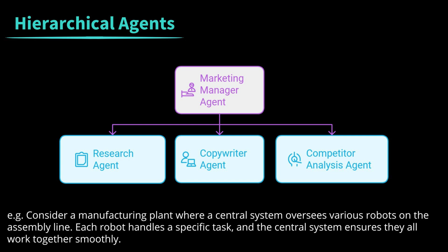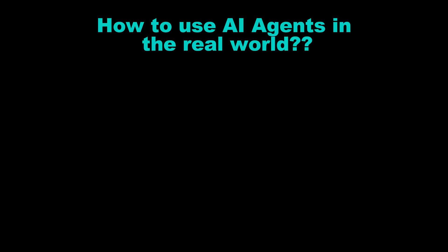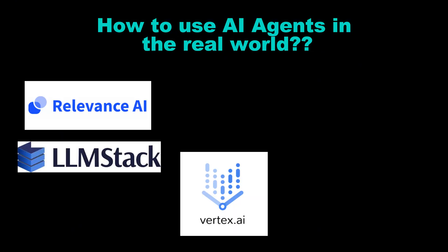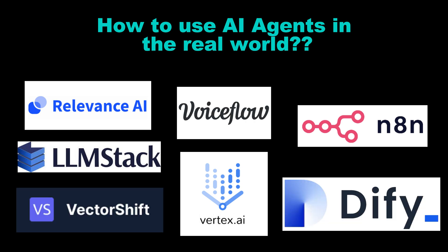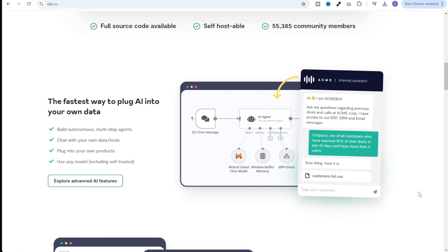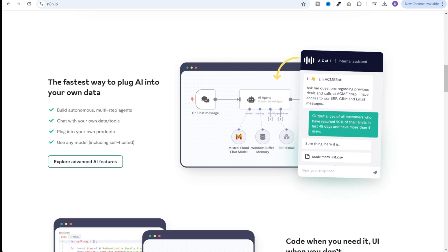So there you have it — AI agents are incredibly versatile and the possibilities are endless. Now let's get our hands dirty and build your very own AI agent without writing any code. There are a number of no-code AI platforms in the market such as Relevance AI, Google Vertex AI, LLM Stack, n8n, Voiceflow, VectorShift, and more. All of these platforms offer a drag-and-drop interface where you can build your workflows, create and integrate AI nodes, and trigger that workflow from outside using APIs, webhooks, or a chat window.